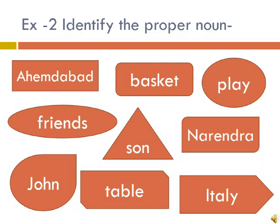In Exercise 2, we have to identify the proper noun. As we know, a proper noun is always written with a capital letter, so we have to see the words which are starting with a capital letter. The words are: Ahmedabad, Basket, Play, Friends, Son, Narendra, John, Table, Italy.